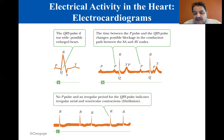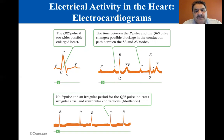In this condition, the atrial and ventricular contractions are irregular. The sinoatrial node normally directs the heart to beat at the appropriate rate, usually about 72 beats per minute.